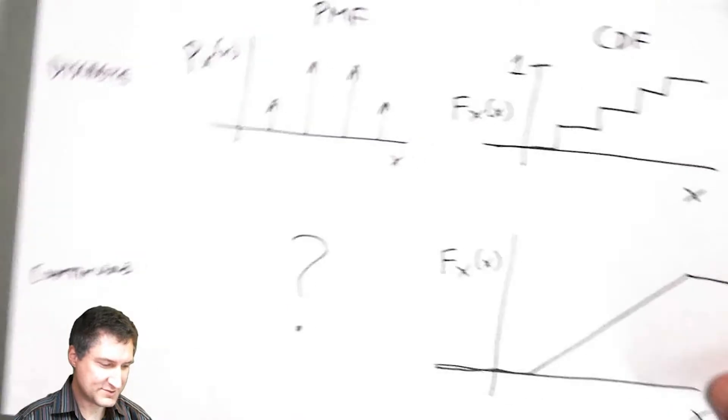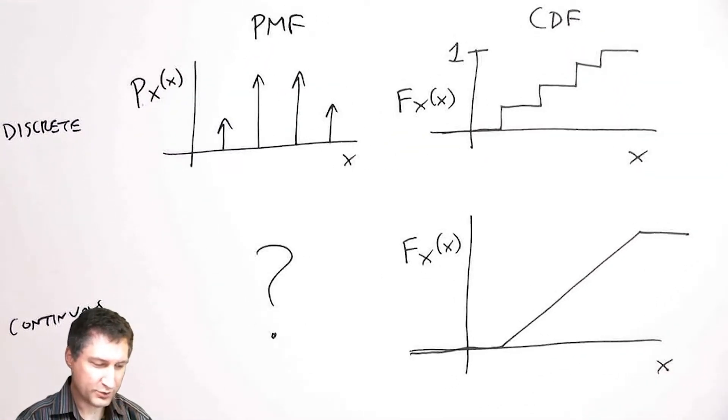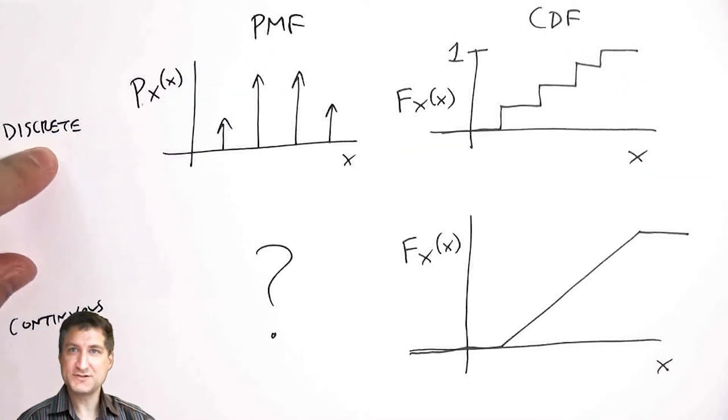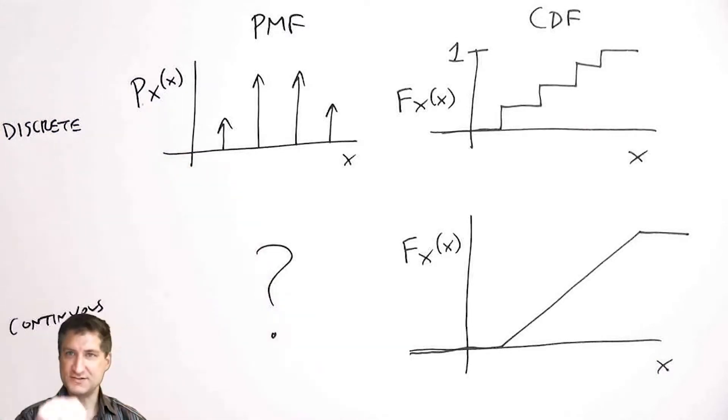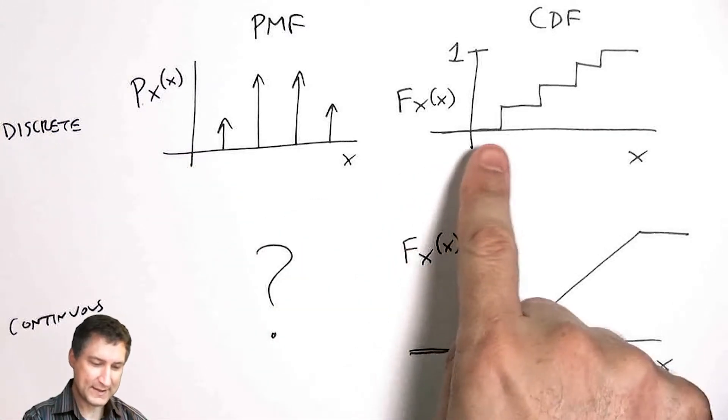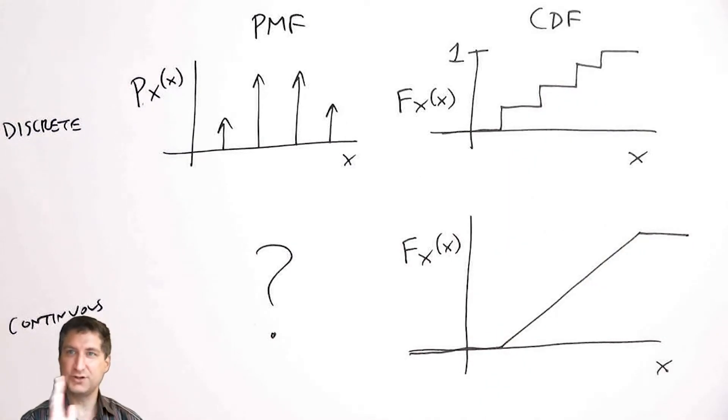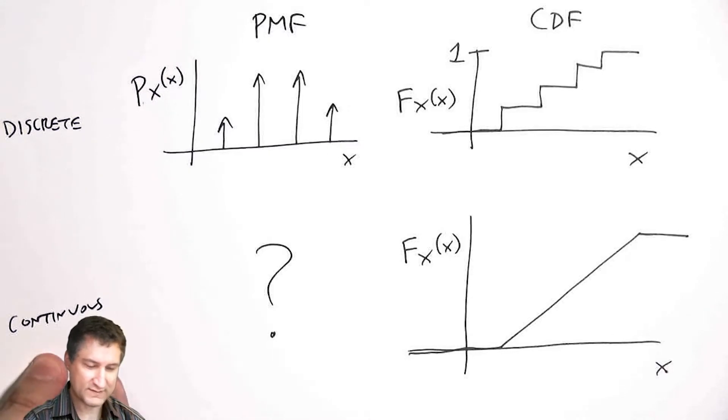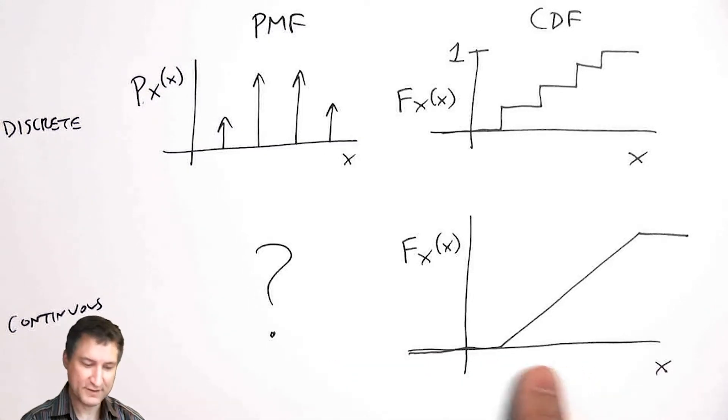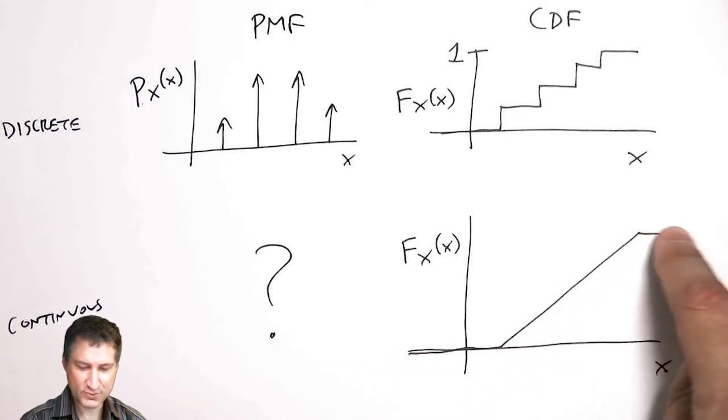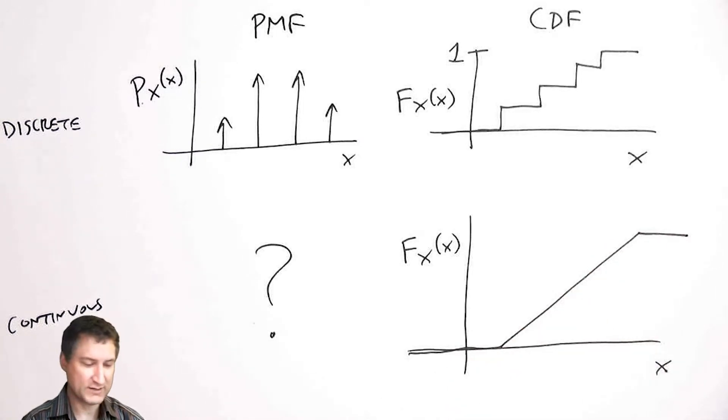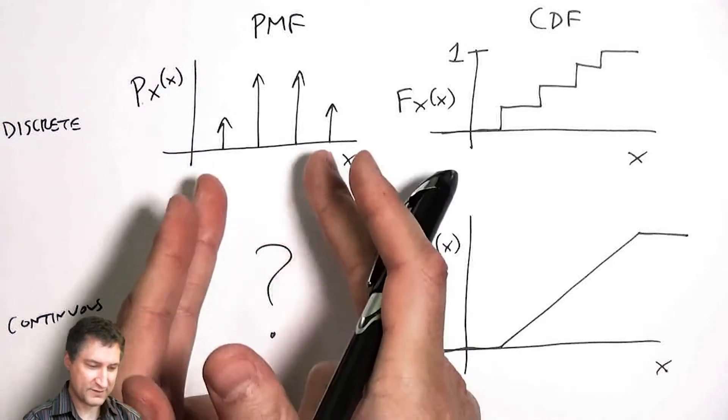Let's look at this picture from last time. This is the world of discrete random variables. We talked about the PMF, these impulse functions, and then we integrate over these impulse functions to get the CDF, which is the cumulative probability of getting some value up to that point. Then we talked about the world of continuous random variables and defined this CDF, which in this case was this nice smooth slope if we were talking about a uniform random variable.